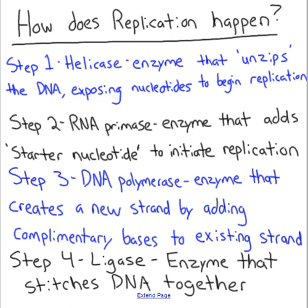Once the DNA is exposed, step two is RNA primase — an enzyme that initiates or begins the process of replication. RNA primase puts a primer down and essentially says this is where we're going to start. It puts down a green traffic light and says 'start now.' So RNA primase indicates where replication is going to begin.